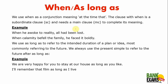We are moving to 'when' and 'as long as'. We use 'when' as a conjunction meaning 'at that time'. The clause with 'when' is a subordinate clause and needs a main clause to complete its meaning — we need an independent clause and a subordinate clause. For example: 'When he awoke to reality, all had been lost.' And 'When calamity befell the family, he faced it boldly.' Here we are representing a specific time mentioned in the sentence.